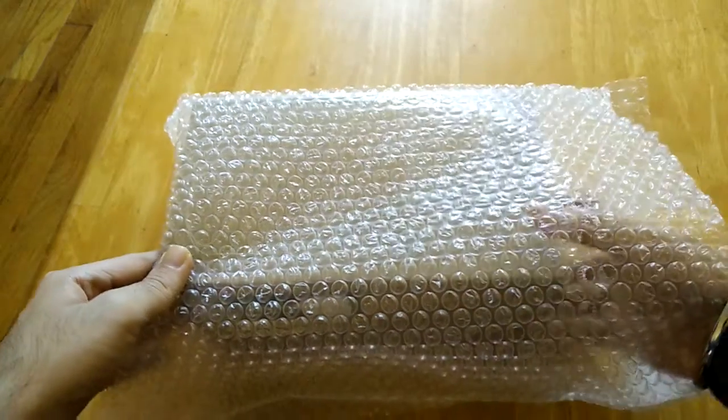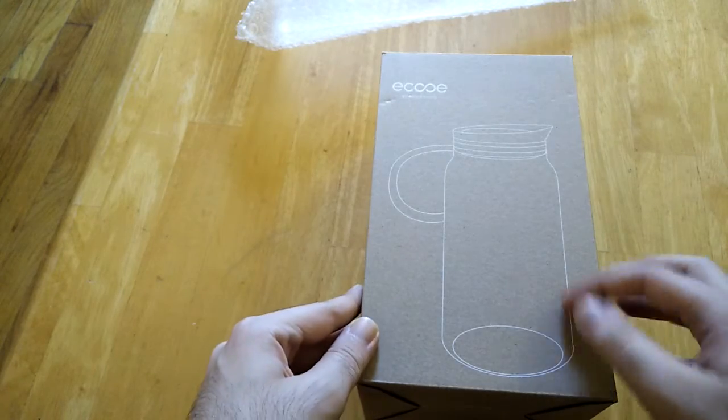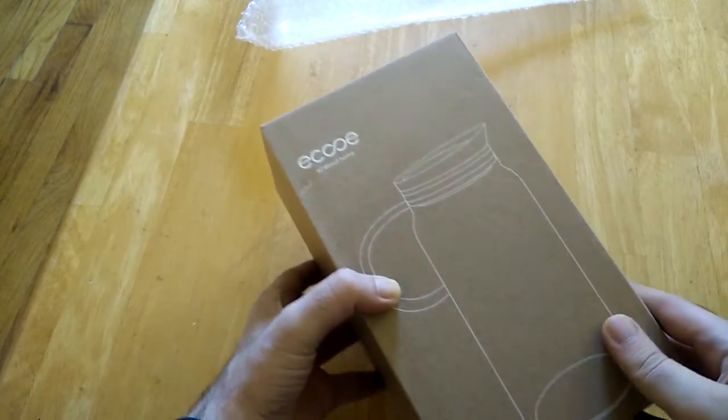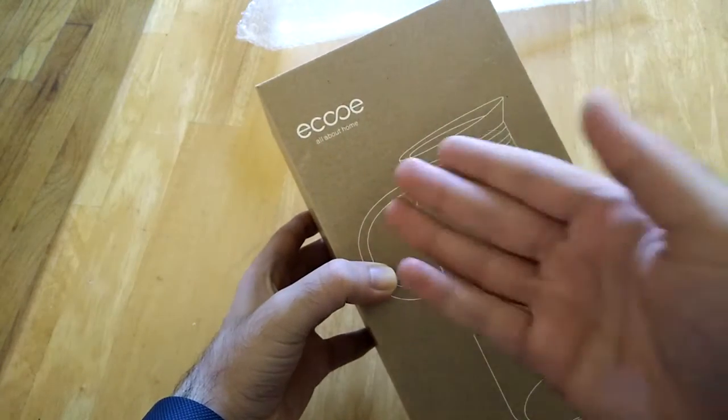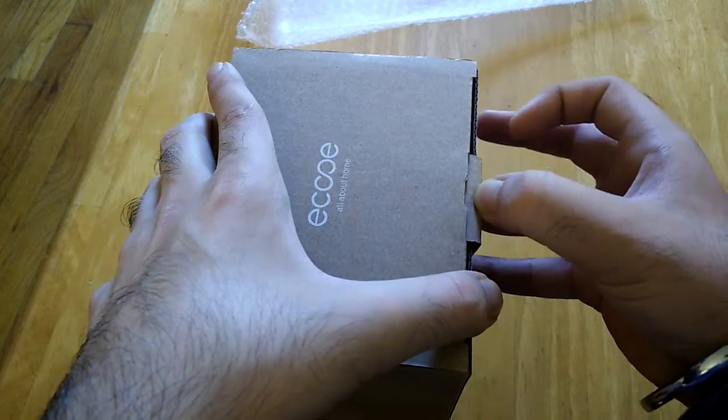Let's go ahead and take it out of the packaging. This is the box itself, shows you an outline of what the jug or the pitcher looks like, and it's made by Echo. Let's go ahead and take it out of the box.